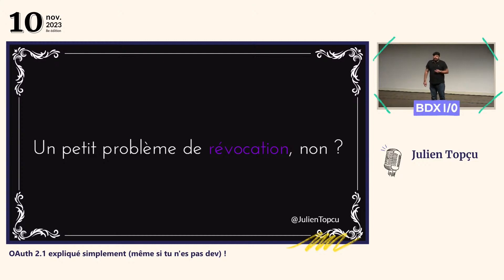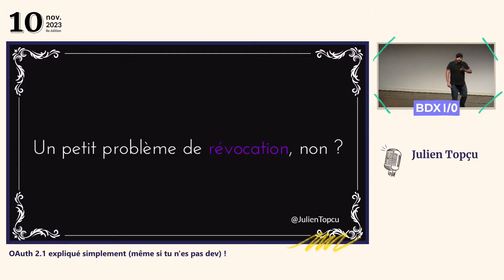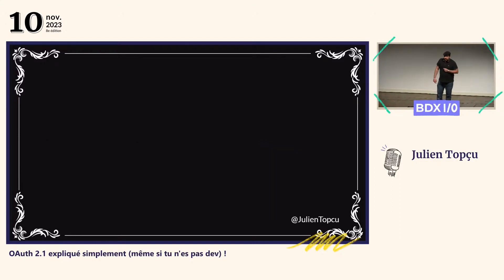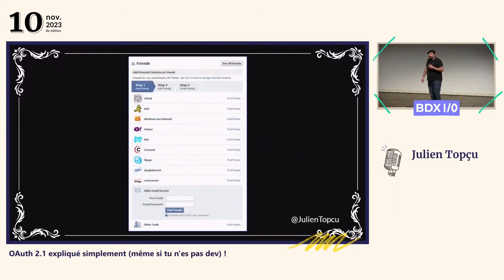On a un moyen, mais il n'est pas terrible. Ce serait de générer un nouveau code à chaque fois que quelqu'un sort de l'hôtel. Mais ce code, il faudrait le refournir aux 400 autres personnes, sachant qu'on est en 1932 et qu'il y a des entrées-sorties toutes les 30 minutes. Donc ce n'est pas terrible comme moyen.